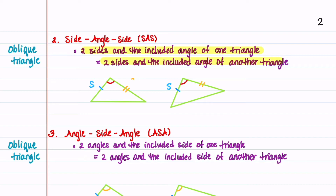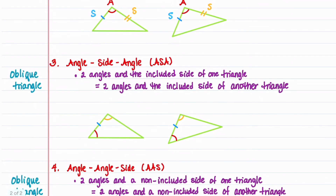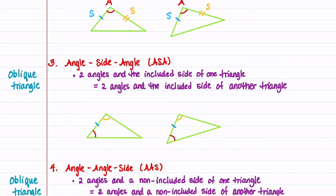Our next theorem is side-angle-side. Our sides in orange are equal, and the angles between these two sides are equal. Our next theorem is called angle-side-angle.